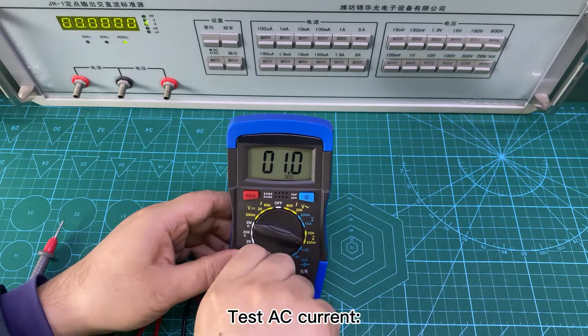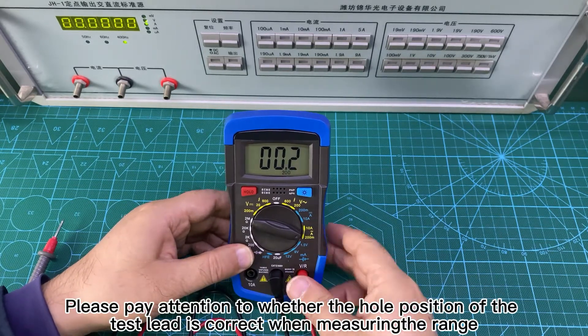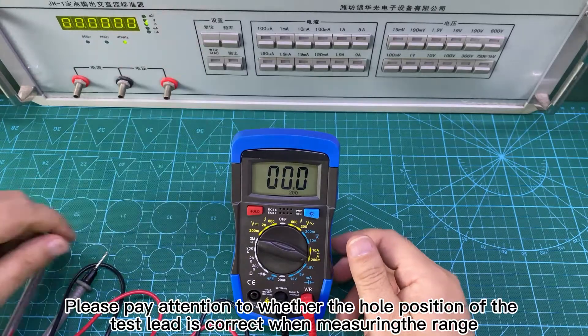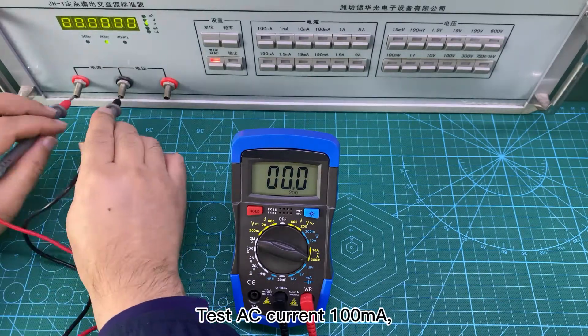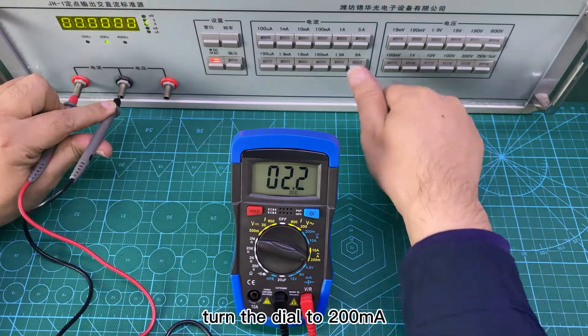Test AC current. Please pay attention to whether the hole position of the test lead is correct when measuring the range of the shift position. Test AC current 100M, turn the dial to 200M.